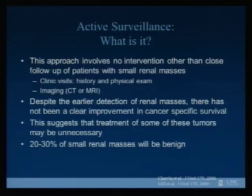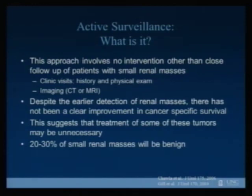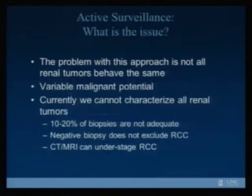Starting with active surveillance: this is an approach that involves no intervention other than close follow-up with clinic visits, history and physical exam, laboratory studies, and imaging — whether CT, MRI, or in some cases ultrasound. Despite the earlier detection of these renal masses, there's not been a clear improvement in cancer-specific survival, which suggests that treatment of some of these tumors may not be necessary. We know that up to 20 to 30 percent of these very small renal masses will actually be benign, so we don't want to over-treat when we don't need to.